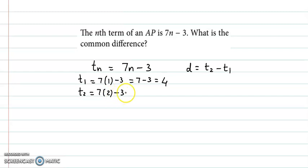minus 3. Now 7 times 2 is 14 minus 3, that becomes 11. And therefore our common difference is 11 minus 4, that is equal to 7. So the common difference is 7.